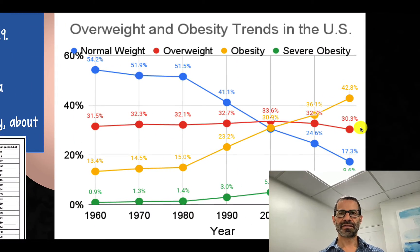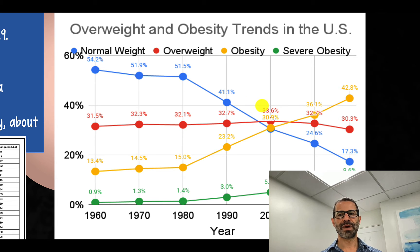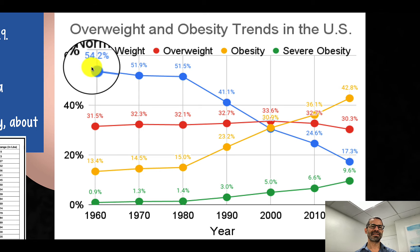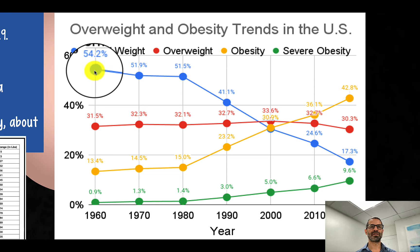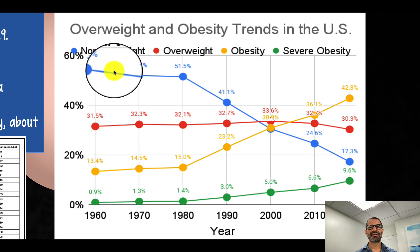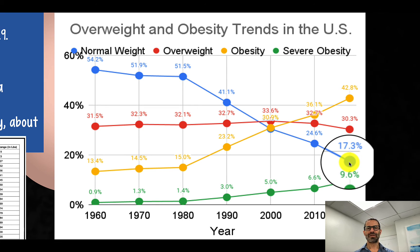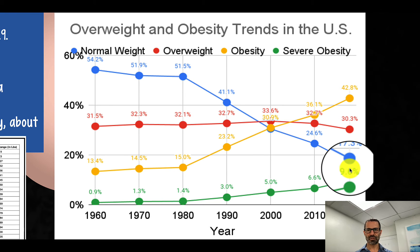This graph shows the trends in normal weight, overweight, obesity, and severe obesity in the US through 2018. In 1960, 54.2 percent of Americans were a normal weight — slightly more than half. That number has decreased so that now in 2018, only 17.3 percent — less than one in five US adults — has a normal body weight.